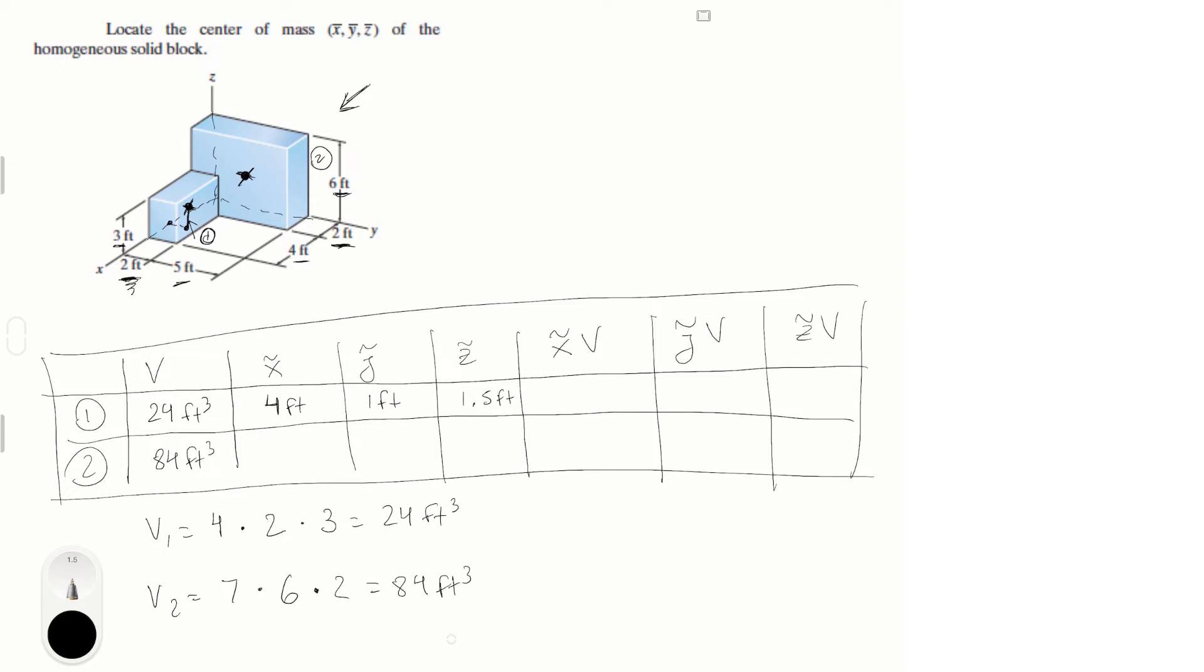Now we're gonna do the other one, which is sitting at one foot in the x. So you go one foot here, then you go on the y 3.5 feet, because this shape is seven feet wide on the y axis, so half of that is 3.5. And then you go up on the z axis 3 feet, which is half of this.